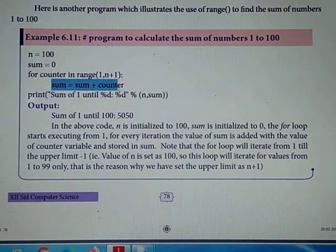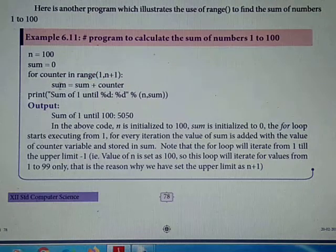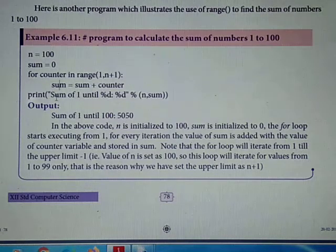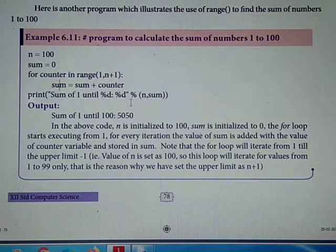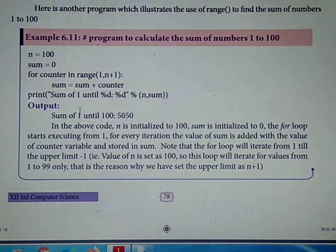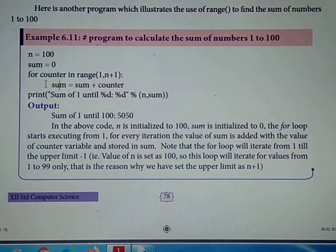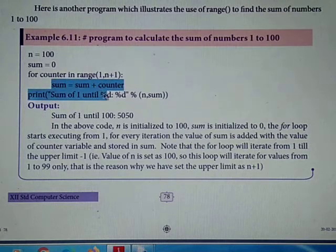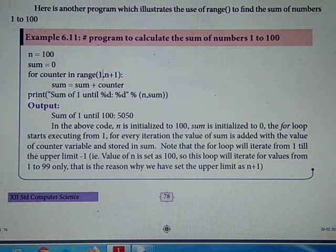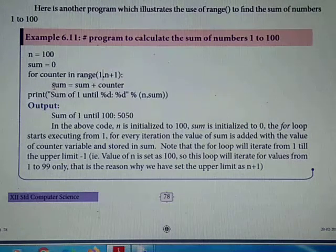Next is sum equal to sum plus counter. Sum is already 0. Now the counter value will be added to sum. Sum is 0, counter is 1, so 0 plus 1 equals 1 is stored in sum. Again the loop continues. Counter becomes 2, sum becomes 1 plus 2 equals 3.